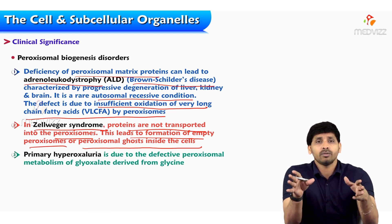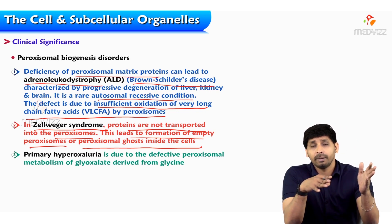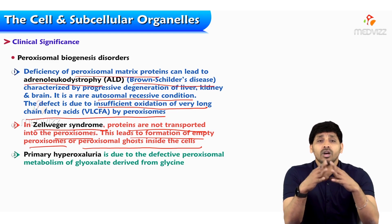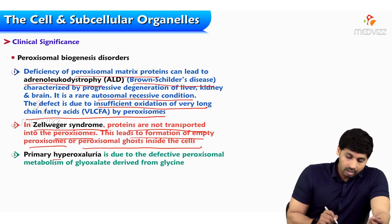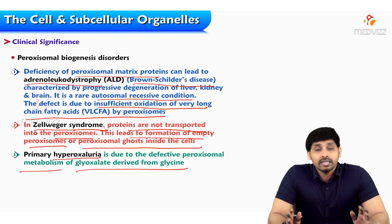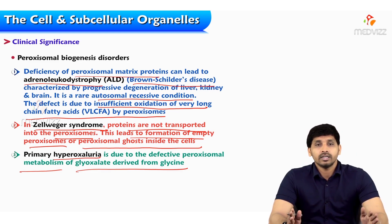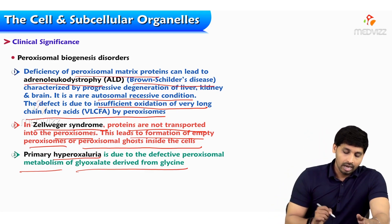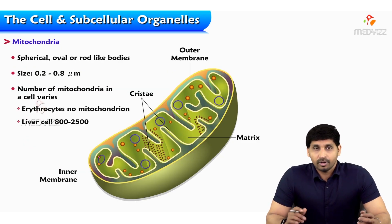These empty peroxisomes are like abandoned buildings with no inhabitants — they are known as ghost cells inside the cell. Another disorder is primary hyperoxyluria, which is related to defective peroxisomal metabolism of glyoxylate derived from glycine. Glycine is an amino acid that undergoes metabolism in the body, and a deficiency of an enzyme present in peroxisomes causes primary hyperoxyluria.